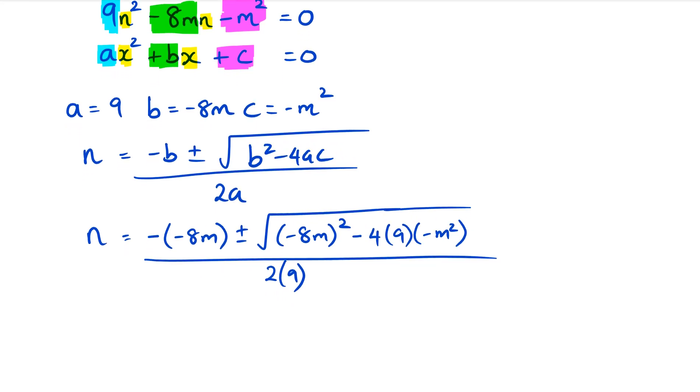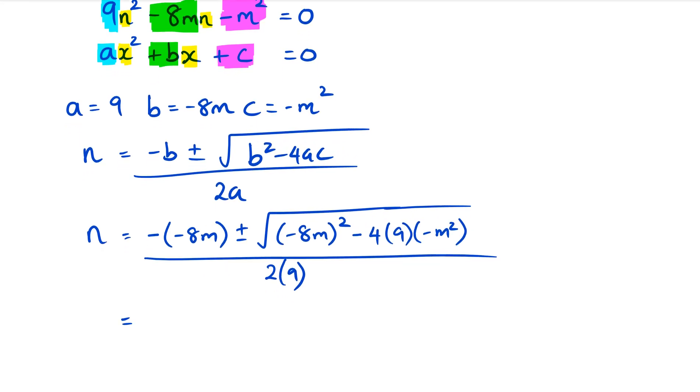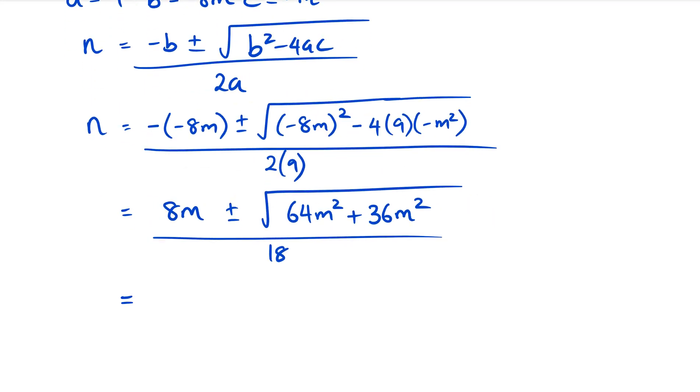So far so good. Minus 4 times 9 times negative m², and all of that is over 2 times 9. Now working inside the brackets, negative of negative 8m is positive 8m, plus or minus - negative 8m squared is 64m², plus we've got 9 times 4 which is 36, and those two negatives cancel out, so we've got 36m² over 18.